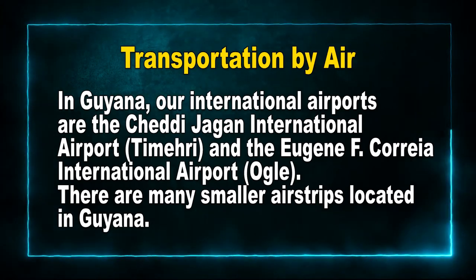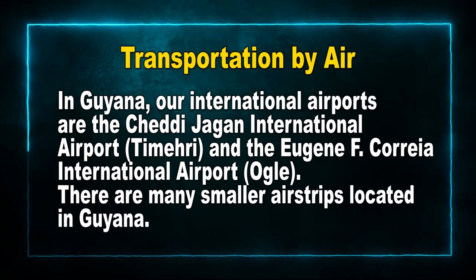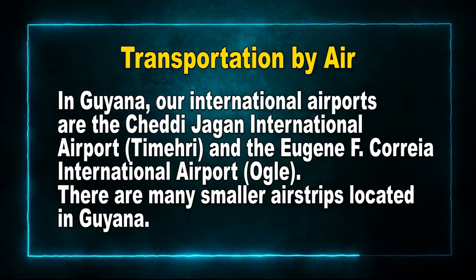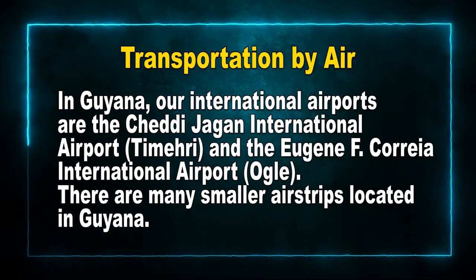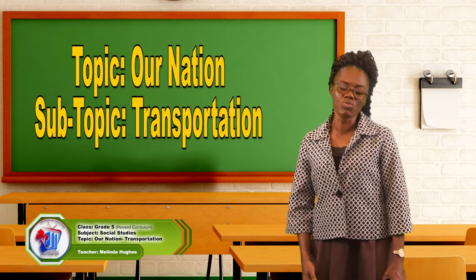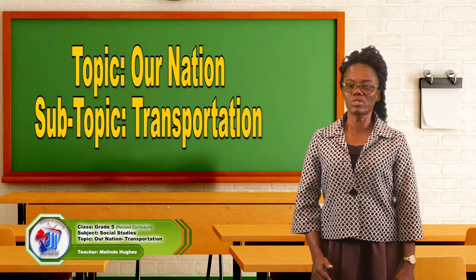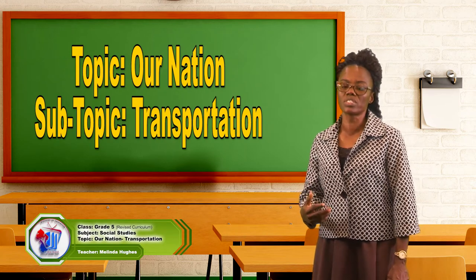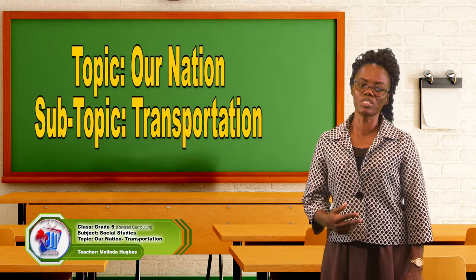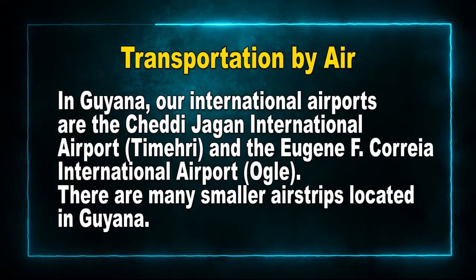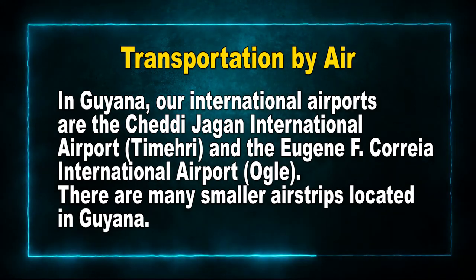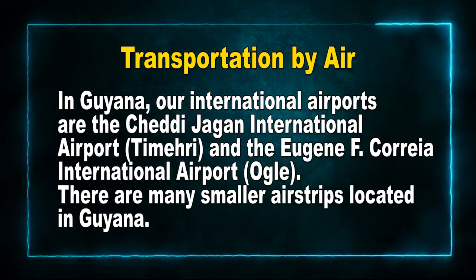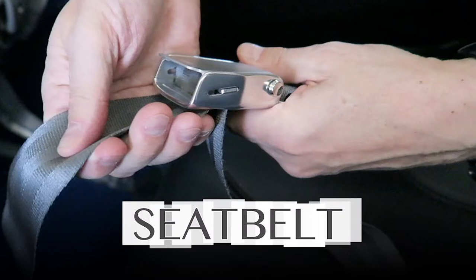Transportation by air — in Guyana our international airports are the Cheddi Jagan International Airport located at Timehri, and the Eugene F. Correia International Airport located at Ogle. There are many smaller airstrips located in Guyana. This mode of transportation is used to move to remote areas where there is no road access — for example, Mabaruma, Port Kaituma, and Paramakatoi in the Highland region. When using the airways we must obey instructions given by the pilot, wear our seatbelts, and observe all signs and symbols.